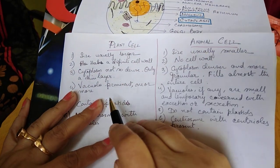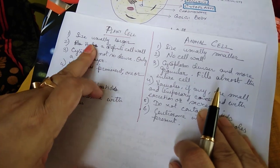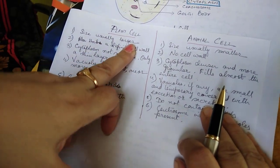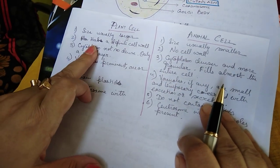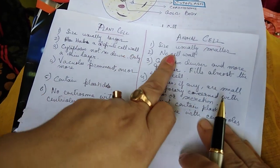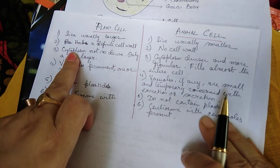Now I told you that there is some basic difference between the plant cell and animal cell. In plant cell the size is larger and in animal cell the size of the cell is smaller. In plant cell they have a definite cell wall. No cell wall is present in animal cells.